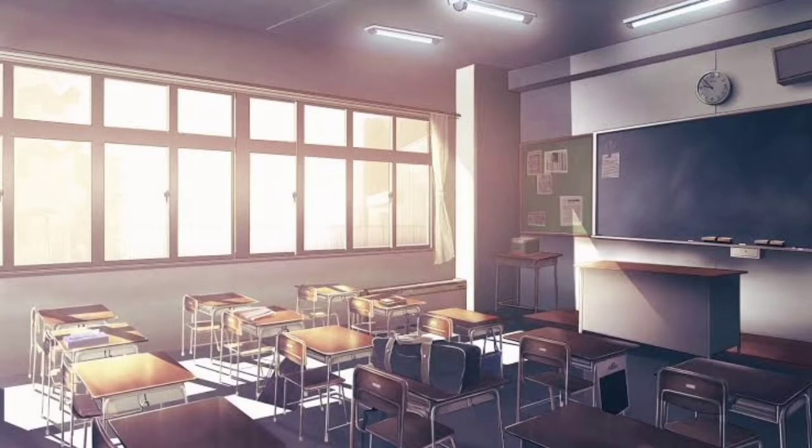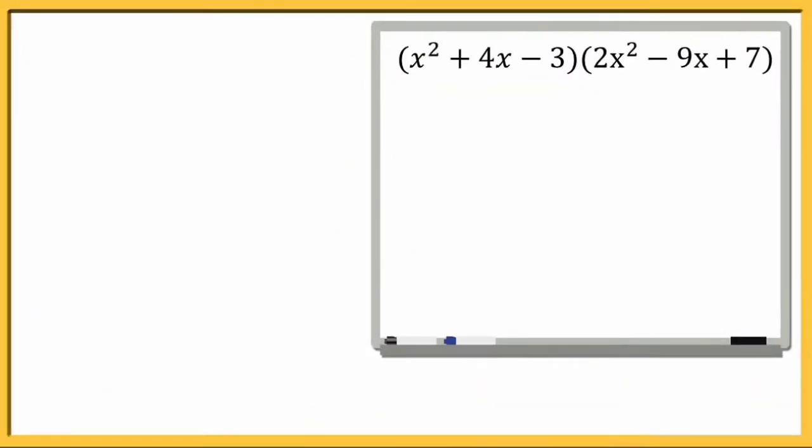I just made a video of the steps on how to multiply polynomials in a shortcut method. Let's start. Our example is x squared plus 4x minus 3 by 2x squared minus 9x plus 7.